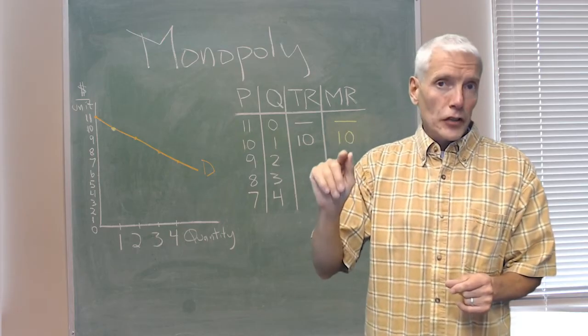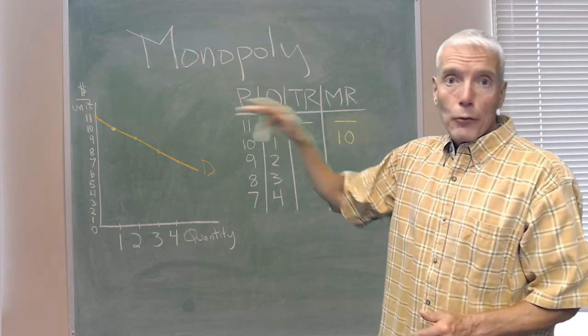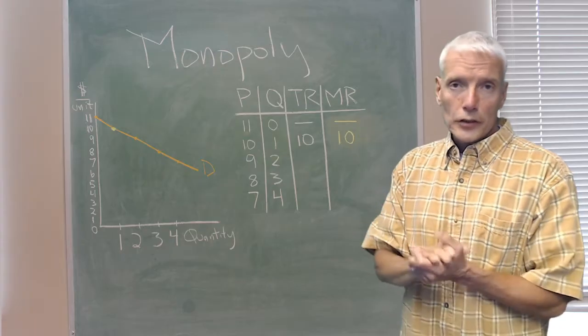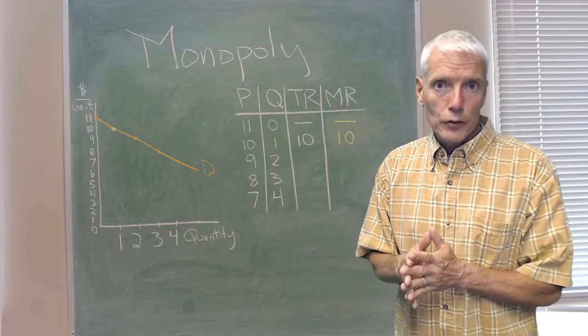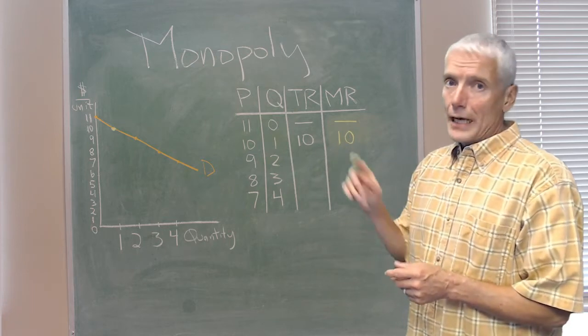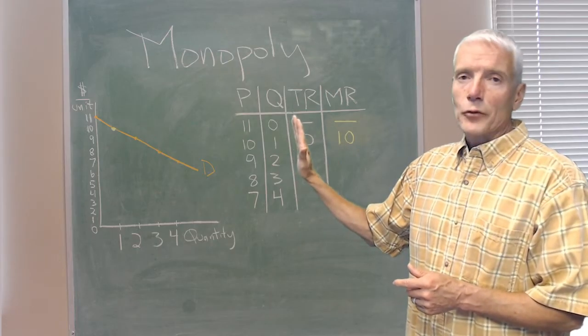When it sells another one, it has to lower its price to $9. We're assuming that every unit is sold for the same price. So both of those units are sold for $9. What is the marginal or additional revenue from that second unit? It's not $9. The price is $9 and it takes in $9 from that second one,